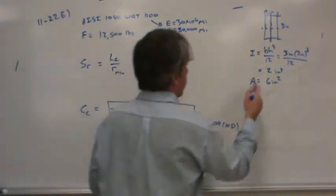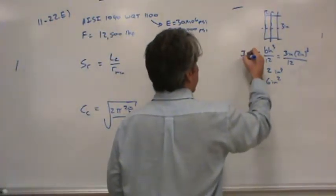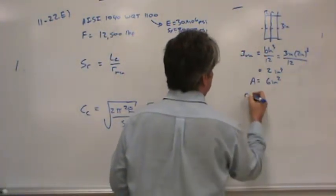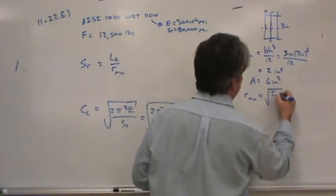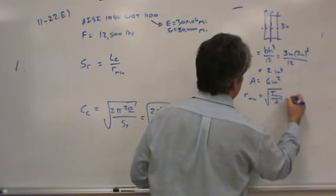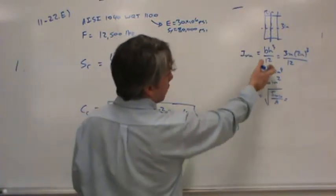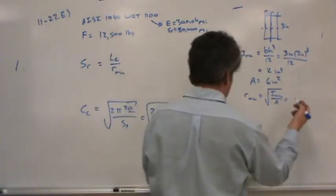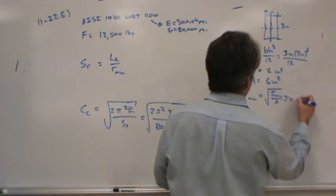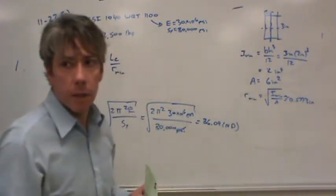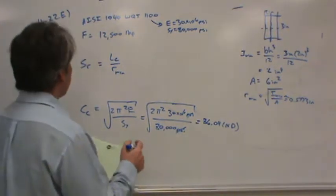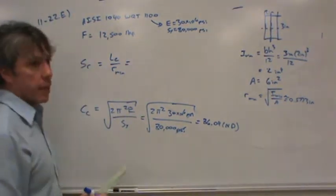We still need the minimum radius of gyration, which is the square root of I minimum over A. So, you're going to plug in 2 here, you're going to plug in 6 here. Take the square root. It comes out to about 0.5773 inches. Everybody with me so far? Now we need to figure out the effective length.